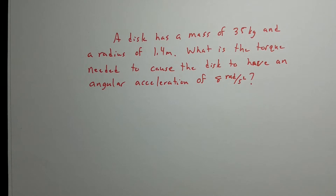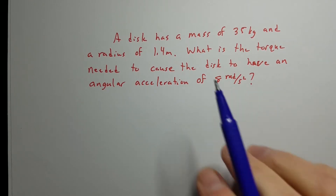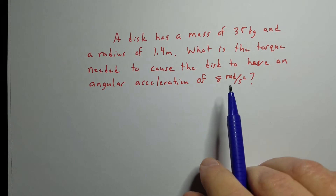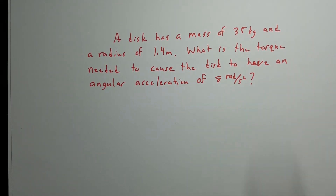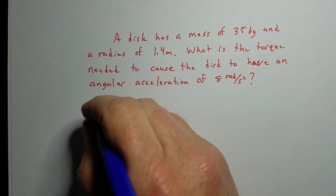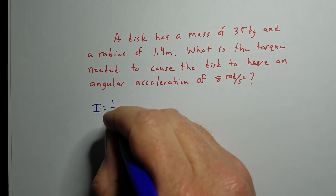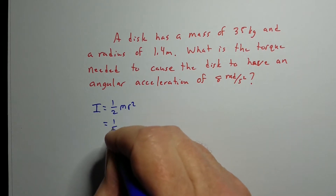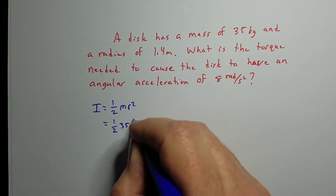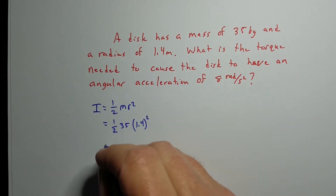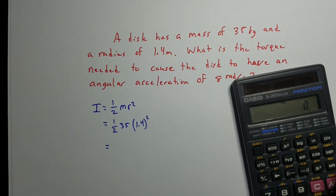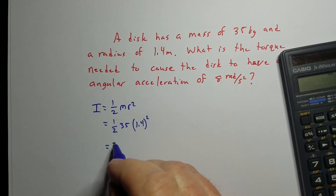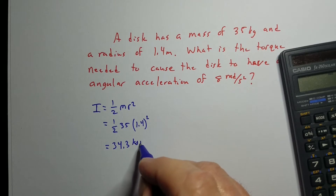To start things out, let's take a look at this one. We've got a disc that has a mass of 35 kilograms and a radius of 1.4 meters. We need to figure out a torque that will give an angular acceleration of 8 radians per second squared. The moment of inertia for a disc is one-half MR squared. So that's 0.5 times 35 times 1.4 squared, giving us a moment of inertia of 34.3 kilogram meters squared.